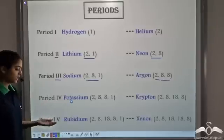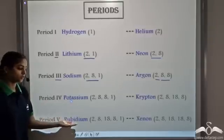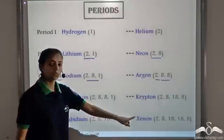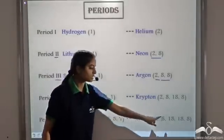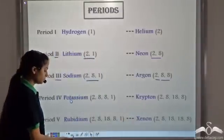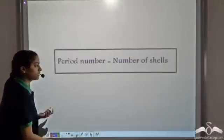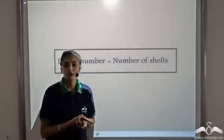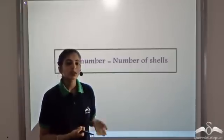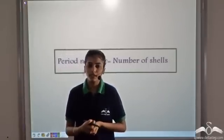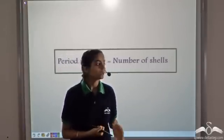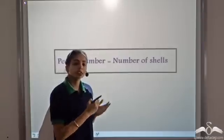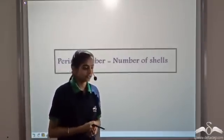The same is true for period 5 elements: it starts with rubidium and ends with xenon, both having 5 shells. So we can conclude that the period number is equal to the number of shells. Similarly, the group number is equal to the number of valence electrons. All elements belonging to a particular period have the same number of shells.